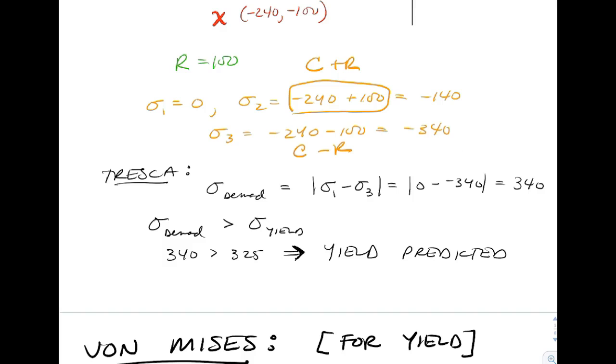Looking at Tresca, I'm going to calculate sigma 1 minus sigma 3, get 340, which is bigger than sigma yield. So the demand has exceeded the capacity, so yield is now predicted. There's no factor of safety to calculate.